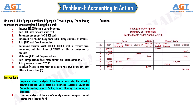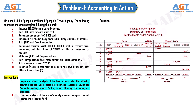Transaction 9: paid employees' salaries of $2,500. Transaction 10: received $4,000 in cash from customers who had previously been billed in transaction 6. Assets in the form of cash increase by $4,000, and assets in the form of accounts receivable decrease by $4,000. All transactions are now entered in the table.